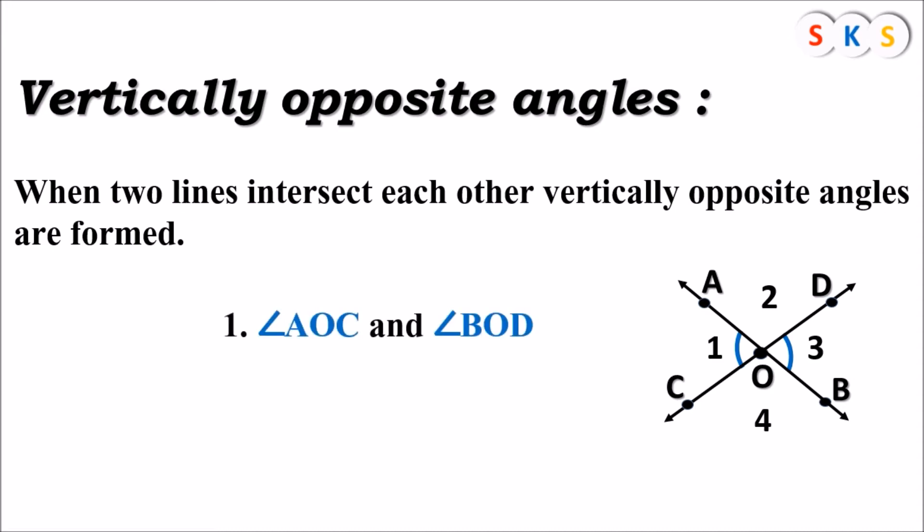Similarly, you can see in this figure that angle 2 and angle 4 are opposite to each other. They are the next pair of vertically opposite angles, that is angle AOD and angle BOC.